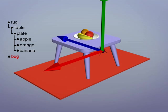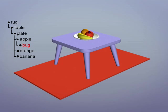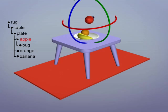We can even add a bug and put it on the apple. Now the bug moves because the bug is the child of the apple.